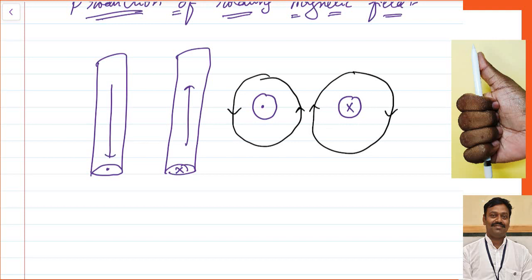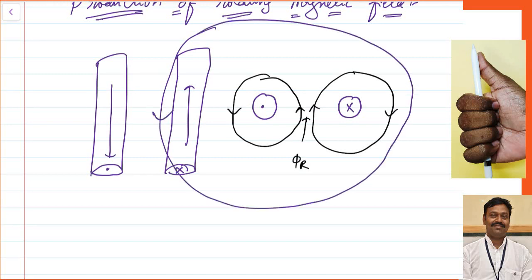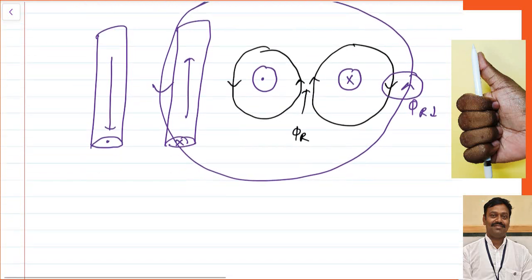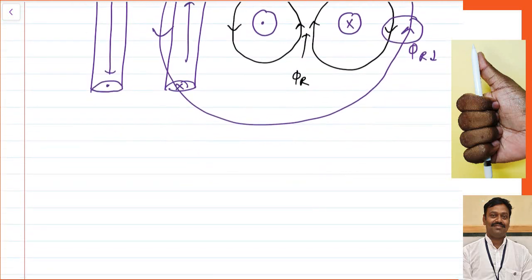Let us see the case when two adjacent conductors are carrying current in opposite directions. In the center, the flux is adding to each other — the resultant flux increases. In the outer side, the resultant flux is decreasing. So we can conclude that whenever two adjacent conductors carry current in opposite directions, a pole will be found between them.